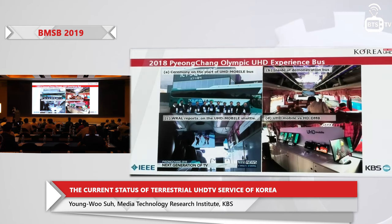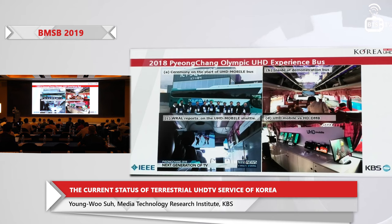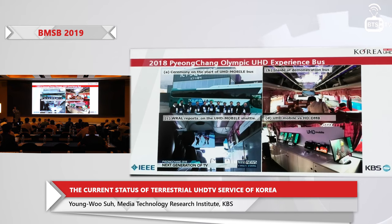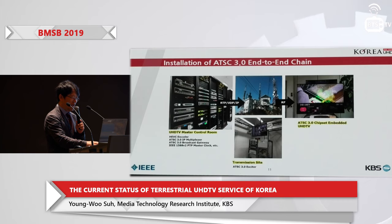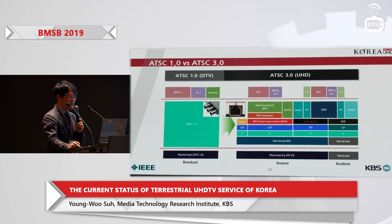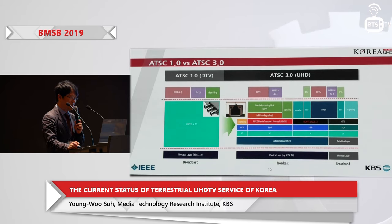We also compared our T-DMB services. T-DMB has evolved — it was 640×240, but now we have 720p HD services for HD T-DMB. UHD mobile is compared with the HD T-DMB services. Our broadcasters inserted ATSC 3.0 and built a new workflow. It was a big change — a lot of change compared to HD T-DMB. It went from 1.0 to 2.0, and it is totally IP-based service.